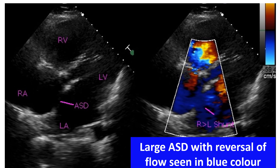Once Eisenmenger syndrome has developed, potential complications like stroke, brain abscess, pulmonary hemorrhage with hemoptysis, and hyperuricemia due to increased red cell turnover can occur. Most children who had heart failure due to large left-to-right shunt in early infancy will get relief when Eisenmenger syndrome develops, as pulmonary blood flow comes down. This may be mistaken for spontaneous decrease in size of the defect. An echocardiogram done in suspected situations can tell whether it is improvement due to spontaneous decrease in size of the defect or development of Eisenmenger syndrome.